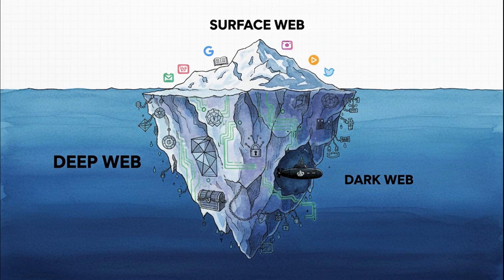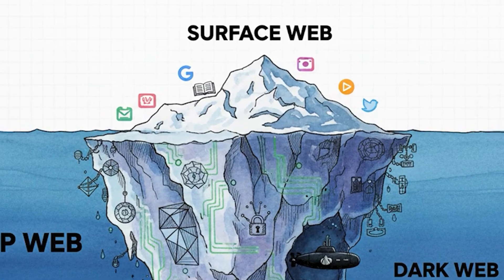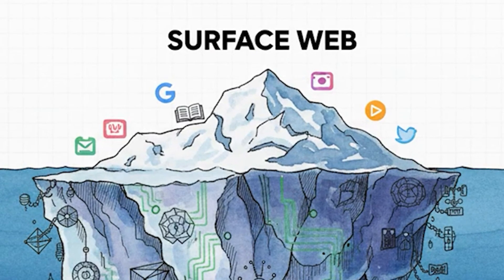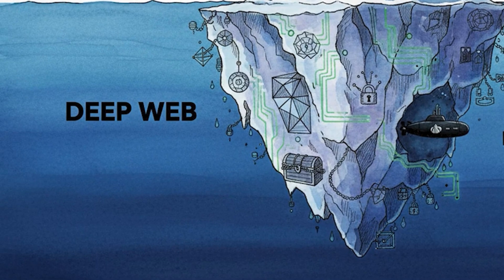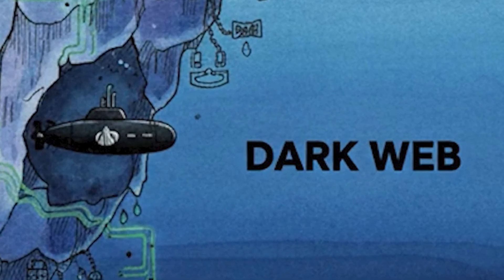That iceberg analogy is actually a great way to think about it, as long as we get it right. The tip of the iceberg that you see — that's the surface web: Google, Wikipedia, all the usual spots. The giant massive part hidden underwater — that's the deep web, all that boring protected stuff. And the dark web? Think of it like a tiny secret submarine hiding way down in the depths. It's part of that underwater section, but it is definitely not the whole thing.